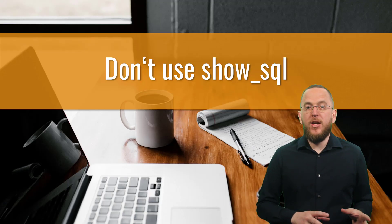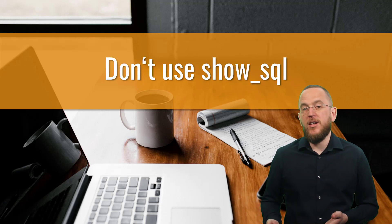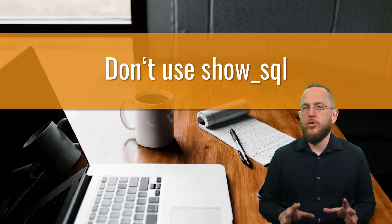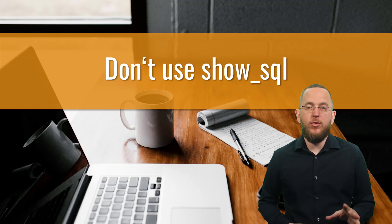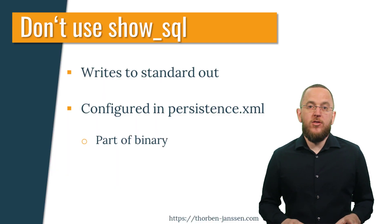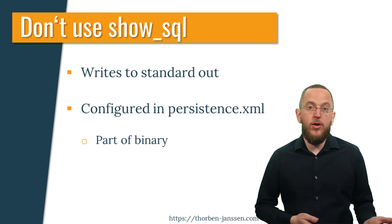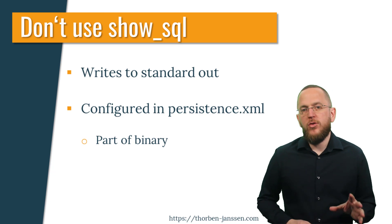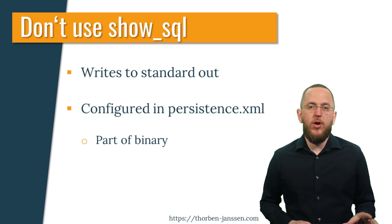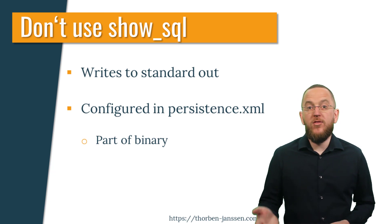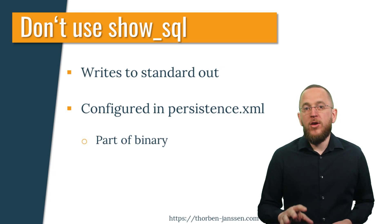How to get Hibernate to log the executed SQL queries is an often asked question, and the most popular answer on the internet seems to be to set the show_sql parameter in the persistence.xml to true. But please don't do this. Hibernate provides two ways to activate the logging of executed SQL queries, and setting the show_sql parameter to true is the worst one. It has two huge disadvantages: Hibernate writes all executed SQL statements to standard out without using the logging framework, making it difficult to direct output to a specific log file. Writing to standard out is also most often much slower than using an optimized logging framework. Also, the persistence.xml is part of your application's binary, so you need to open that binary to activate or deactivate the logging of SQL statements. Your logging framework's configuration is most often an external text file that can be easily changed on any system.